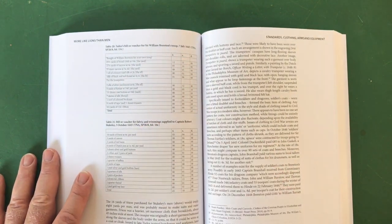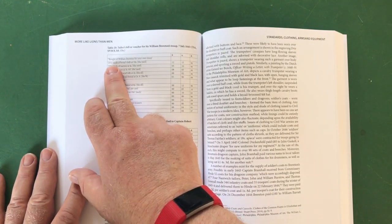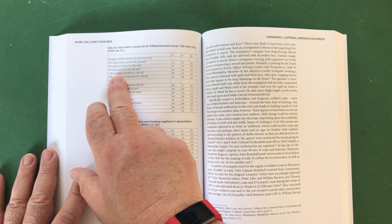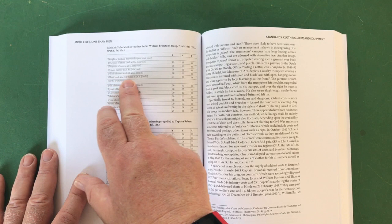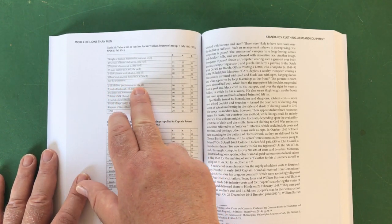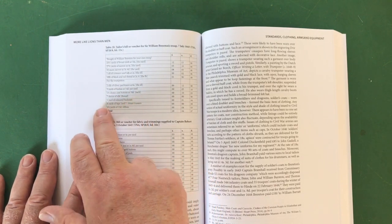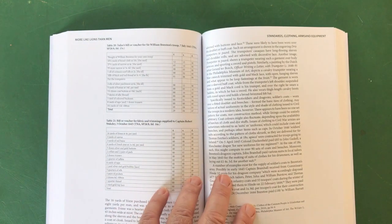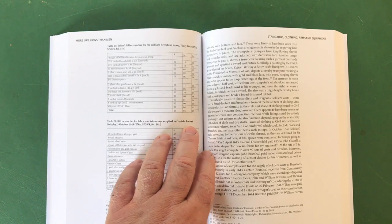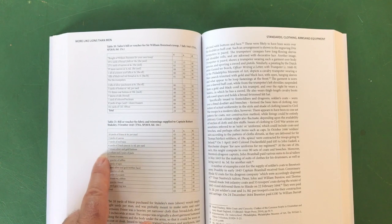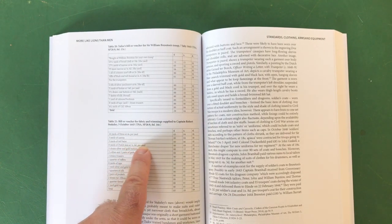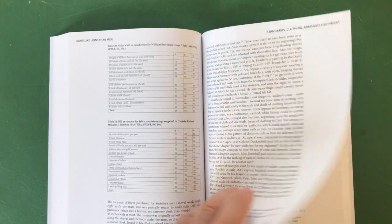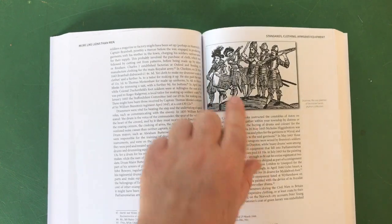And on it goes. Taylor's bill or voucher for Sir William Barrington's troop, 7th of July 1643: 25 and a half yards of broadcloth at 10 shillings the yard, 27 and a half yards of narrow at four shillings the yard, one ell of crimson scarf silk at two shillings the ell, 10 pounds of black and red thread. For the trumpeters two ells of silver parchment, one and a half dozen coat buttons at 10 pence each, seven skeins of silk thread and on it goes. This is fantastic detail. I love this. Bill or voucher for fabric and trimming supplied to Captain Robert Stukeley: 16 yards of frieze at four shillings a yard, six yards of Dutch jean at one shilling sixpence a yard, two dozen trussers - we'll have to look up what a trusser is but it sounds fantastic.